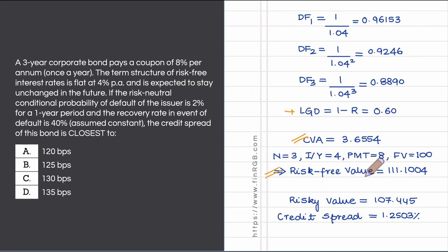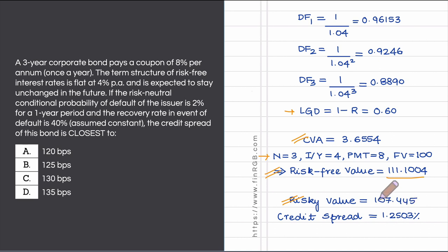Quickly determine the risk-free value of the bond using the TVM inputs. This minus the CVA of 3.6554 gives you the risky value. Using the TVM functionality in your calculator, convert this risky value into an equivalent yield — the yield comes out to 5.2503%. Therefore, 5.2503% minus the risk-free 4% tells you that the credit spread is approximately 125 basis points.